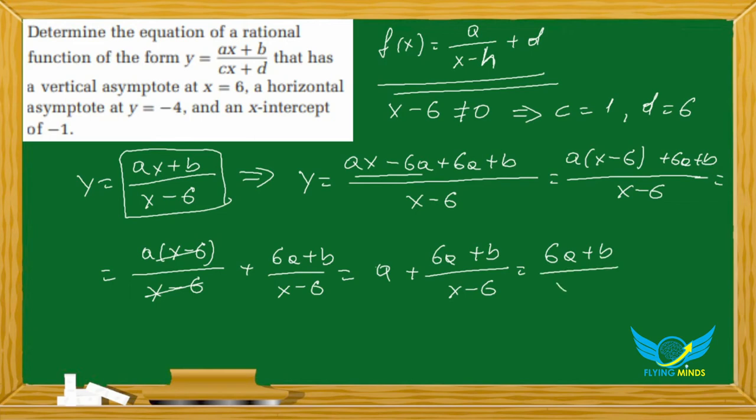We're going to rewrite this as a plus 6a plus b over x minus 6. Now it looks like the form of this result matches the general form.